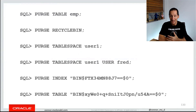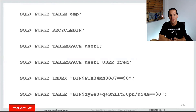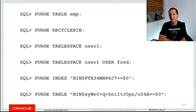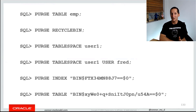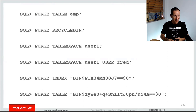You can manually remove things from the recycle bin if you want. You can purge a particular table, or you can purge the recycle bin — which clears all the objects in your schema that have been dropped in the past — or purge things for a particular tablespace.